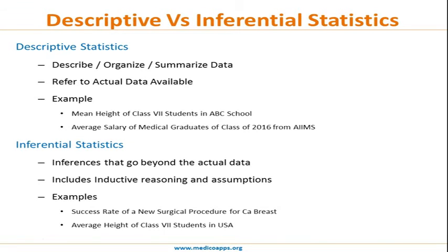Inferential statistics goes beyond the actual data — it includes inductive reasoning and assumptions. A good example would be the success rate of a new surgical procedure for CA breast. When you have established a new procedure and you have data for say 100 or 120 patients, using that data you are supposed to give the probability of success or failure in a new patient.